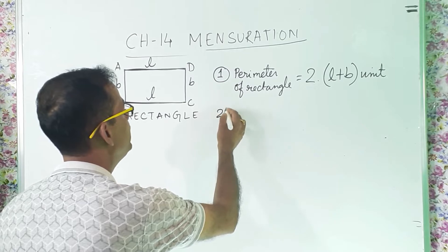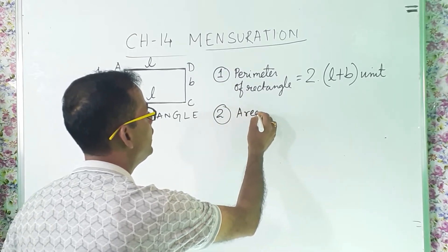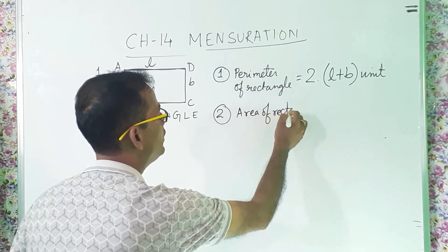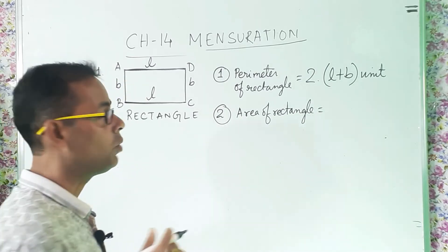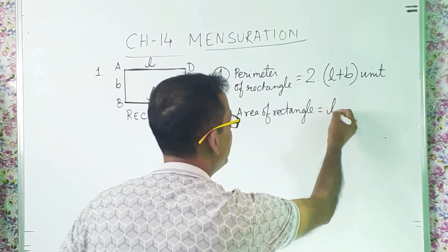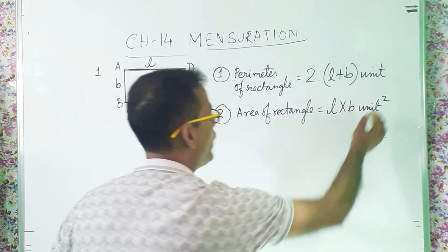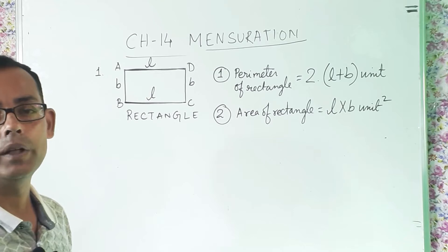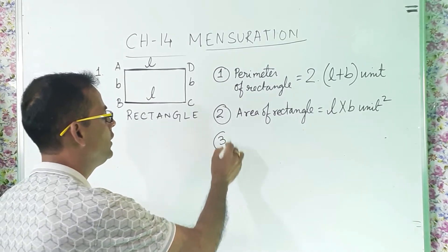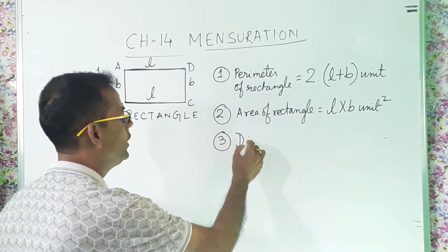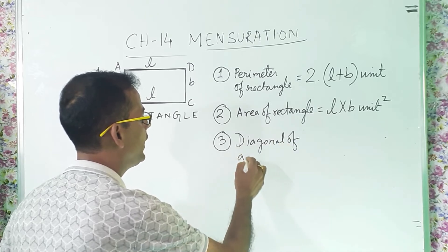The second formula is the area of a rectangle, which is length into breadth, in unit square. And there is one more formula — the third one — which is the diagonal of a rectangle.